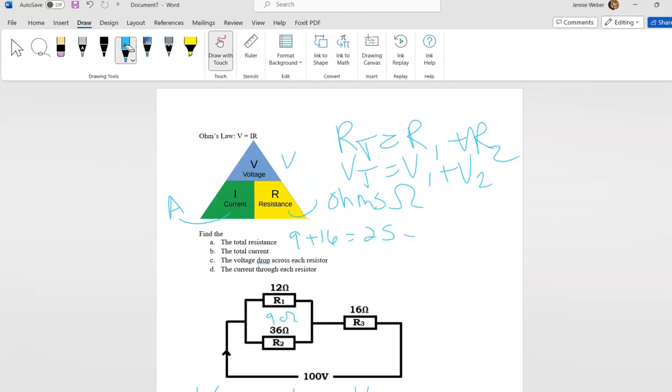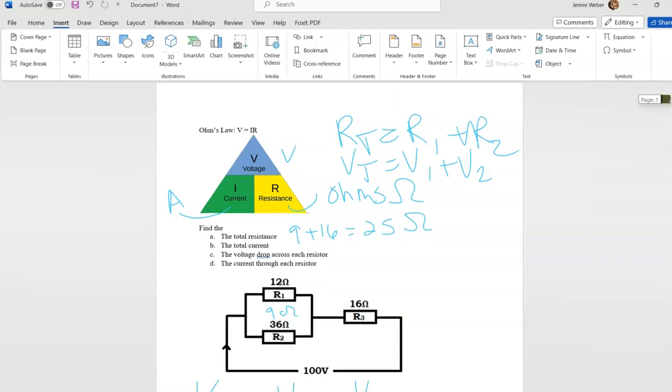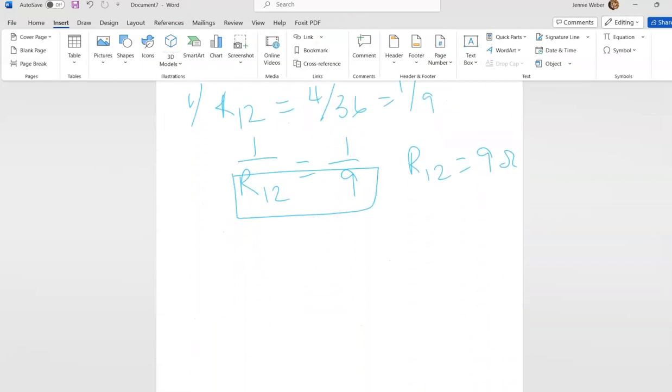Now I need to find the total current. So this was part A. Part B, I need to find the current, to find I, so I start with this but I need to solve for I.